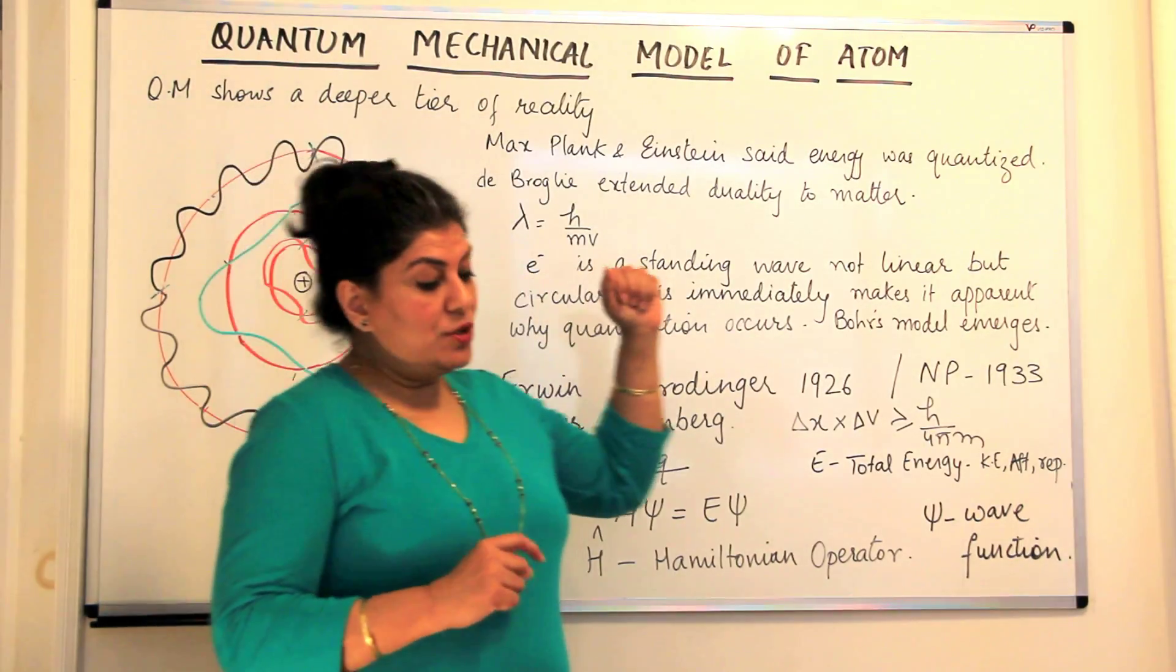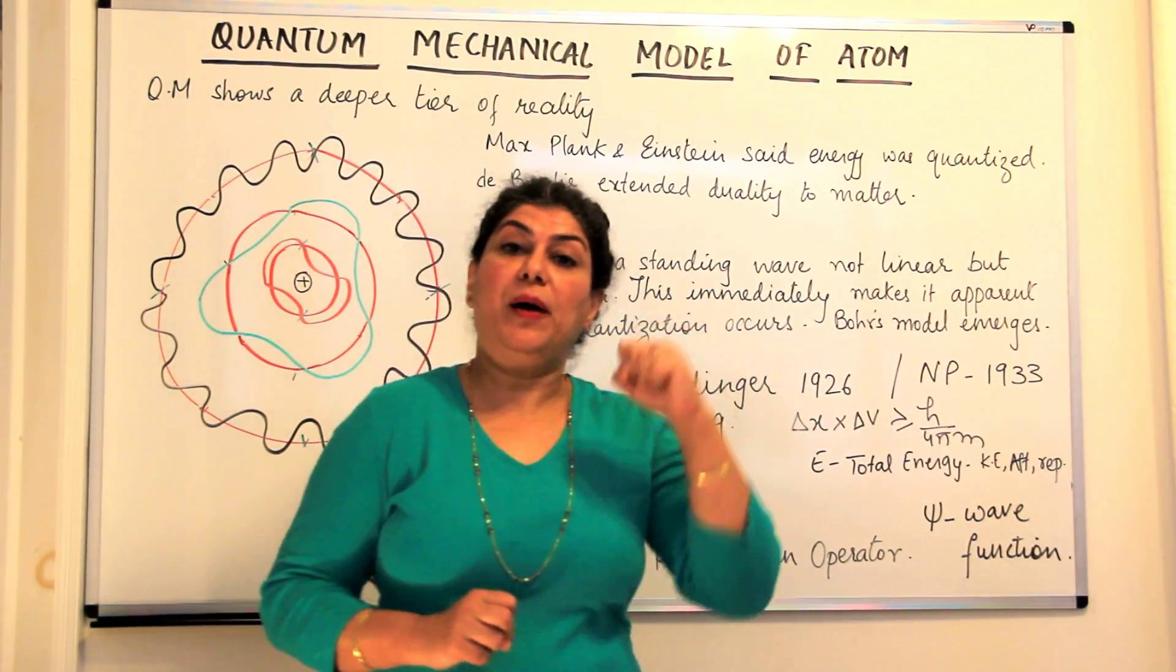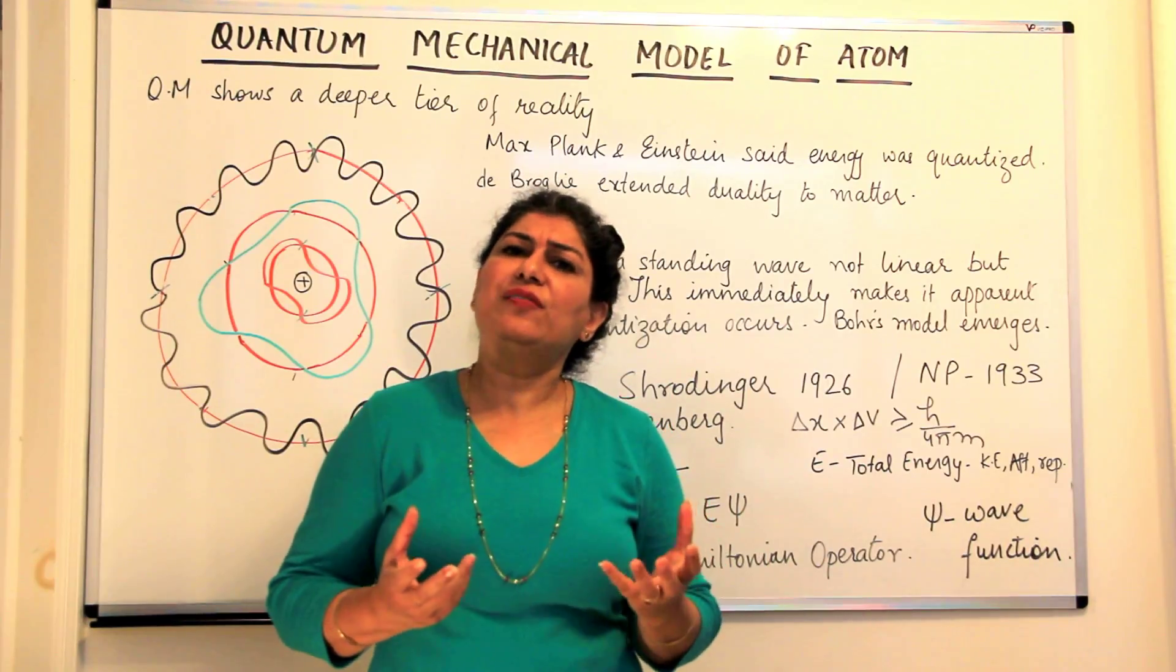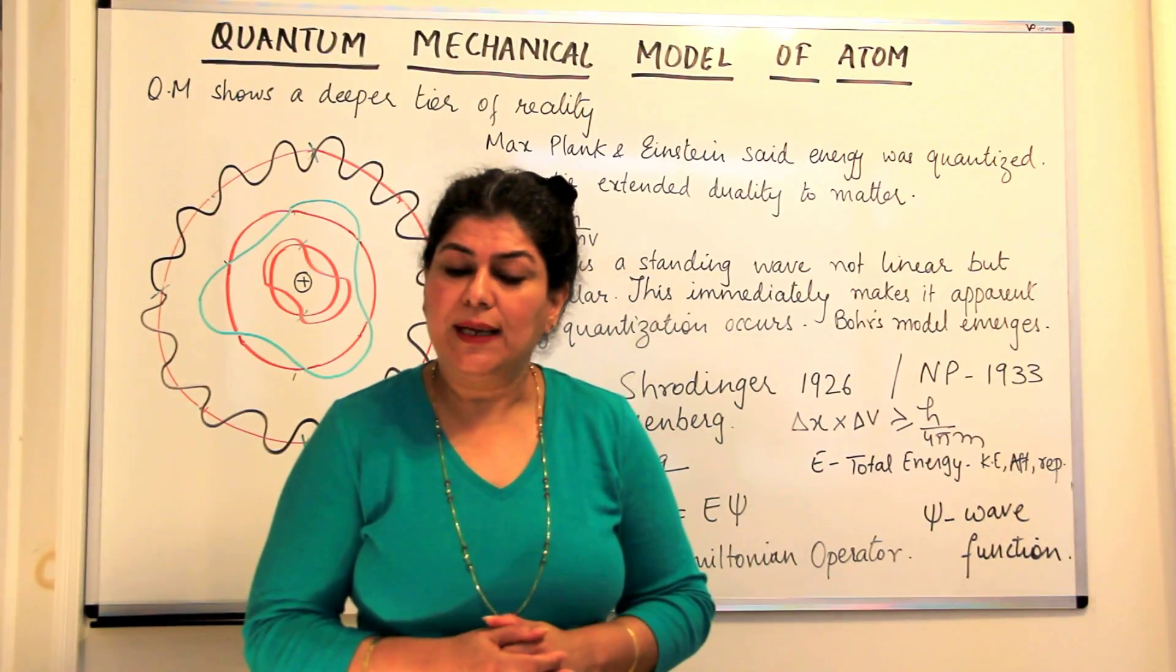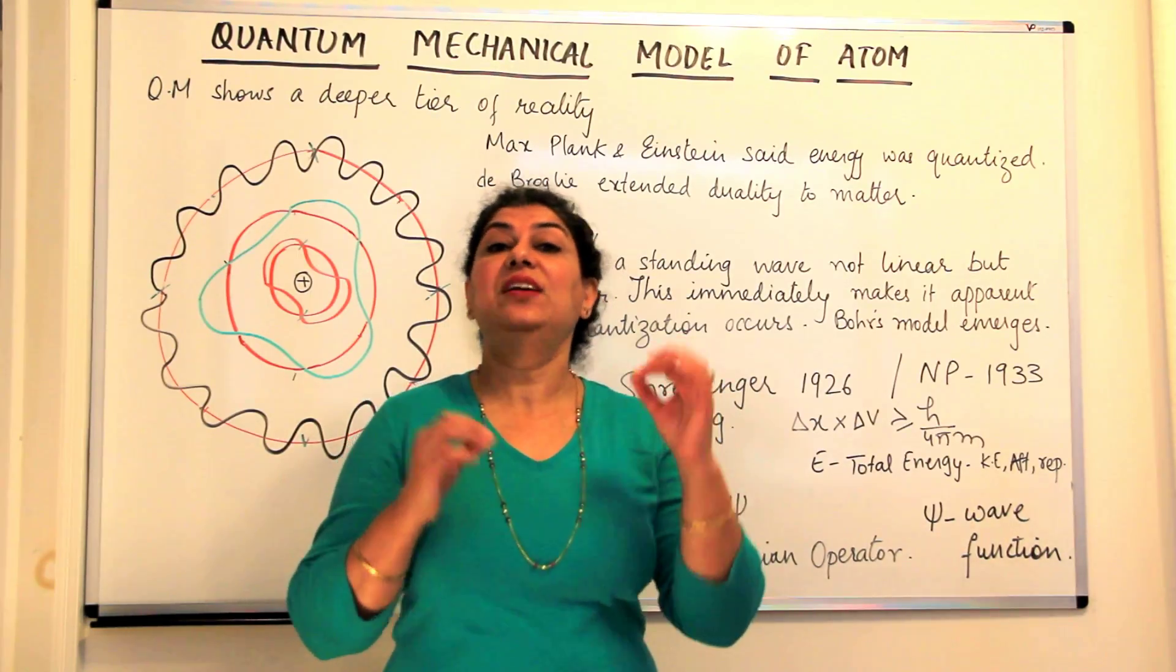Then he said that if electron has both wave-like nature and particle-like nature, then what kind of a wave is an electron? And the explanation given was that an electron is a standing wave.